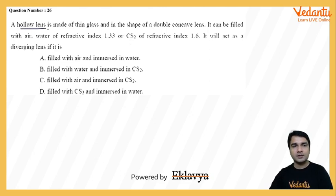A hollow lens is made of thin glass and in the shape of double concave lens. It can be filled with air, water of refractive index 1.33, or CS2 carbon disulfide of refractive index 1.6. It will act as a diverging lens if it is...